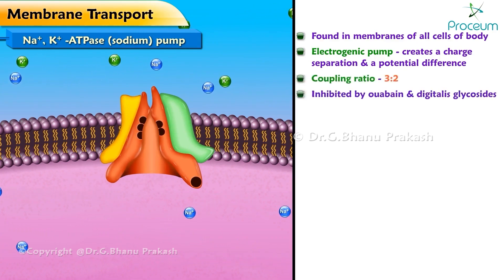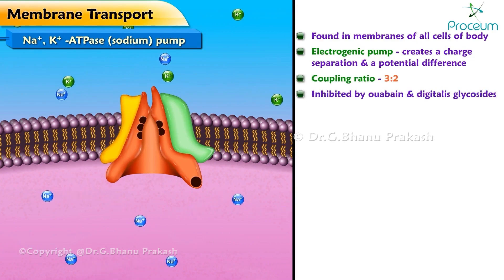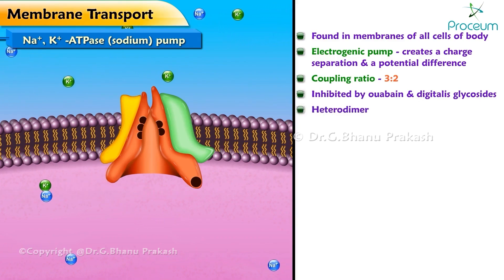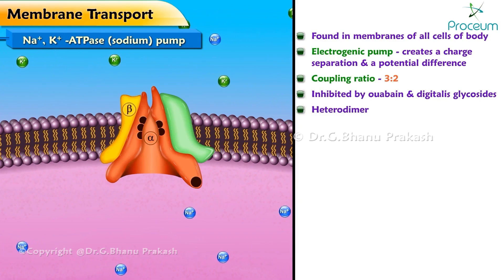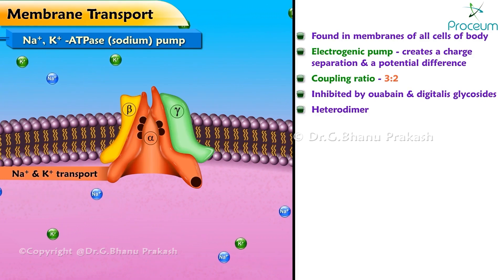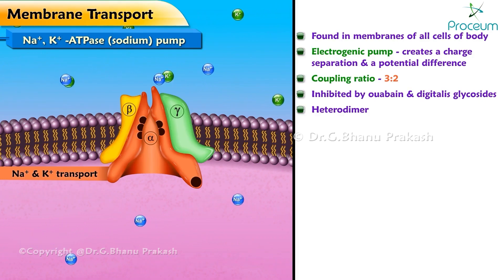For each two K+ ions that it moves in, the coupling ratio is therefore three to two. It is inhibited by ouabain and digitalis glycosides. It is a heterodimer made up of an alpha subunit, a beta subunit, and a gamma subunit. Na+ and K+ transport occur via the alpha subunit.